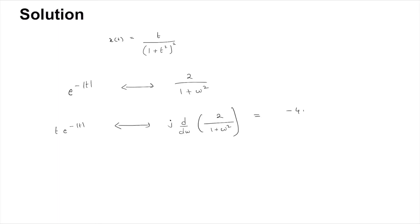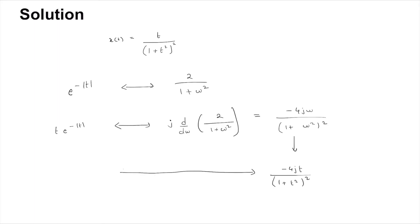If you actually perform the frequency differentiation on 2/(1+ω²), this will come out to be -4jω/(1+ω²)². Next, you can apply the duality property.